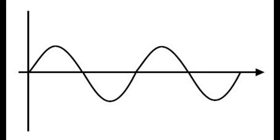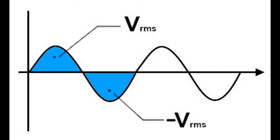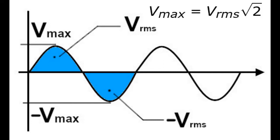By the way, the VRMS that I mentioned in the schematic means basically the average voltage of the sine wave. But in this video I'm talking about the maximum voltage, which is always the square root of 2, or about 141% greater than VRMS.